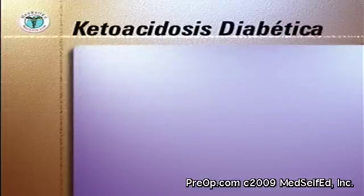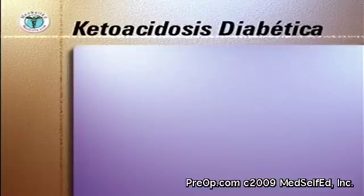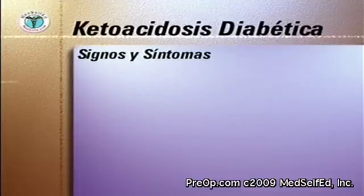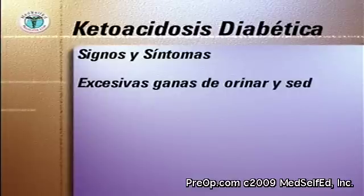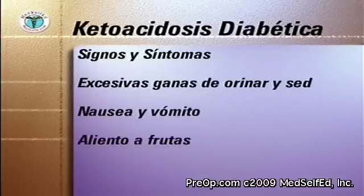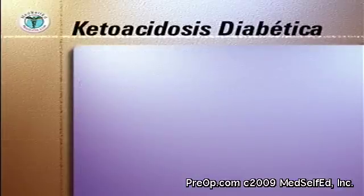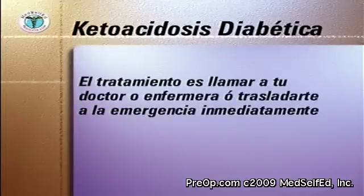Si sus niveles de azúcar permanecen por encima de 250 miligramos por decilitro, usted podría evolucionar hacia una ketoacidosis diabética, especialmente si tiene diabetes tipo 1. Los signos y síntomas son excesivas ganas de orinar y sed, náusea y vómito, aliento de frutas y presencia de ketonas en su orina. El tratamiento es llamar a su doctor o enfermera o acudir inmediatamente a la sala de emergencia.